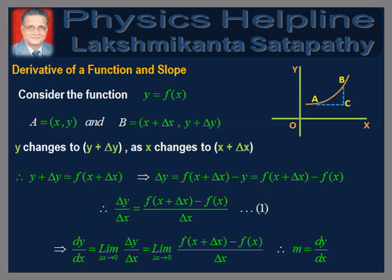We will use an approximation. We know that a small portion of a curve at a point may be considered to be a straight line coinciding with the tangent at that point. Hence, Δx is made very small and in the limiting case, we write Δx → 0, which means Δx is negligibly small but not equal to zero. Therefore, we get lim(Δx→0) Δy/Δx = lim(Δx→0) [f(x + Δx) − f(x)] / Δx. We define the derivative of the function as dy/dx = lim(Δx→0) Δy/Δx. In this limiting case, AB becomes a straight line and dy/dx represents the slope of the function. Therefore, m = dy/dx.